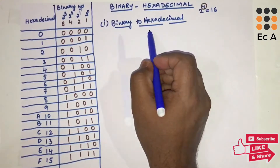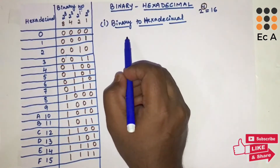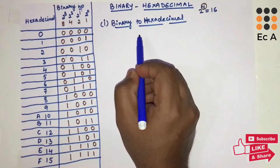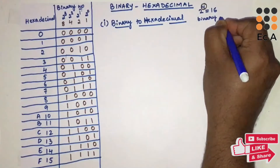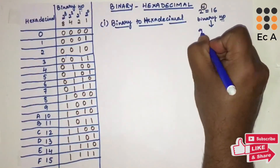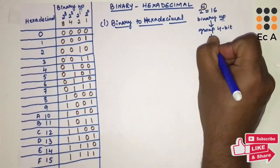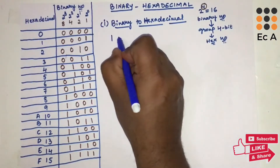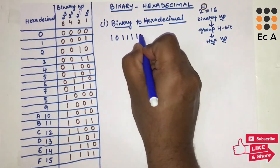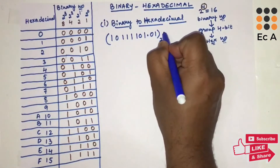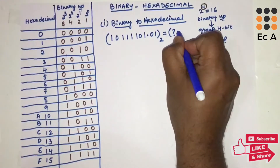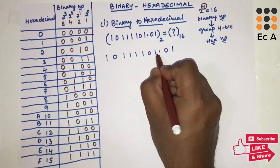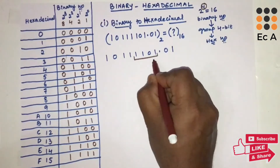To convert from binary to hexadecimal, group the binary number into groups of 4 bits, then write the hexadecimal equivalent for each 4-bit group. Let us take the example 1011 1101.01₂ and convert it to hexadecimal. We rewrite the number and begin grouping into 4-bit groups from right to left.